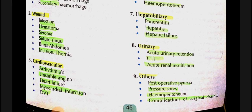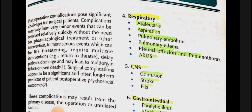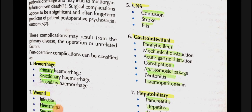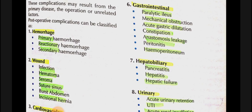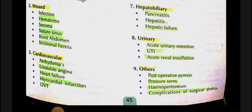Cardiovascular complications include arrhythmia, unstable angina, heart failure, and myocardial infarction. Respiratory complications include atelectasis, aspiration, pulmonary embolism, pulmonary edema, pleural effusion, pneumothorax, and ARDS. CNS complications include confusion, stroke, and fits. GIT complications include paralytic ileus, mechanical obstruction, acute gastric dilatation, constipation, anastomosis leakage, peritonitis, and hemoperitoneum. Hepatobiliary complications include pancreatitis, hepatitis, and hepatic failure. Urinary complications include urinary retention, UTIs, and acute renal insufficiency. Others include post-operative pyrexia, pressure sores, hemoperitoneum, and complications of surgical drains.